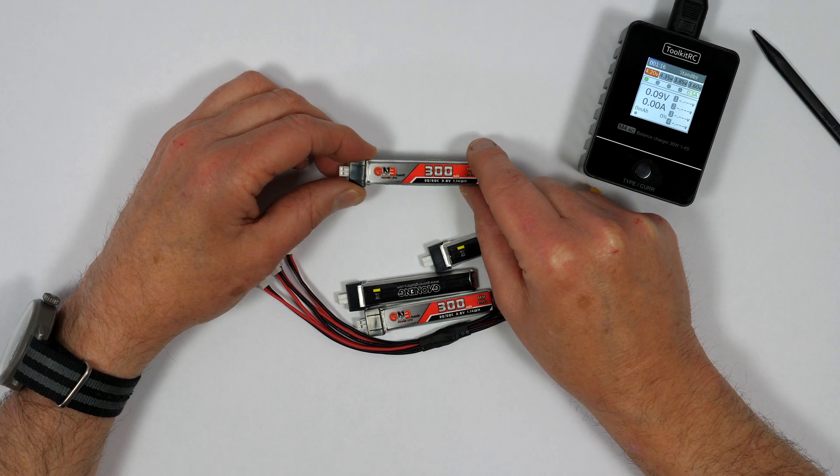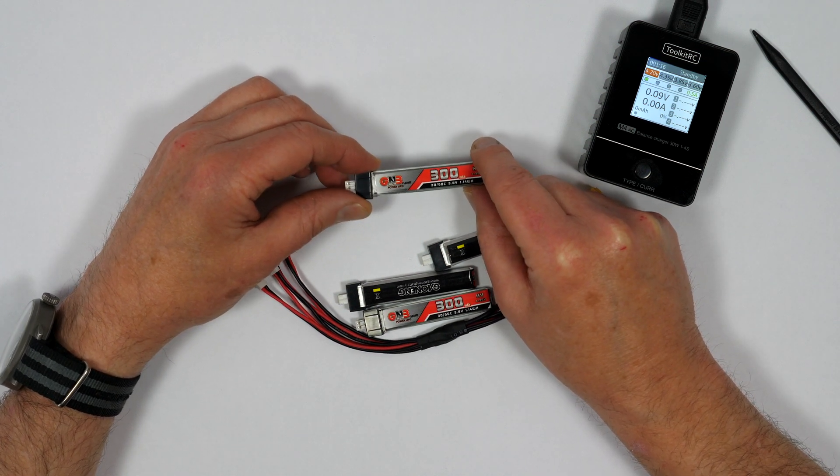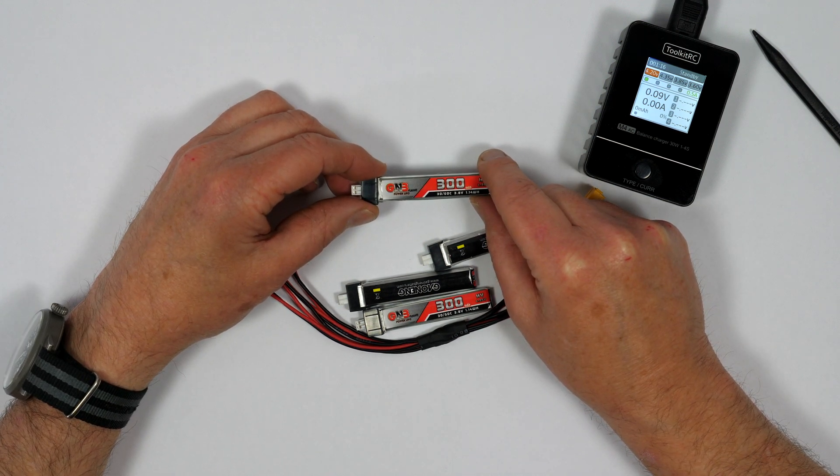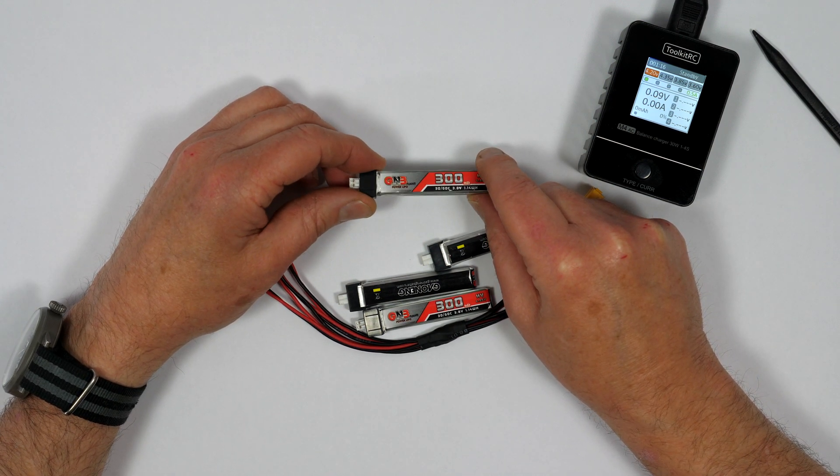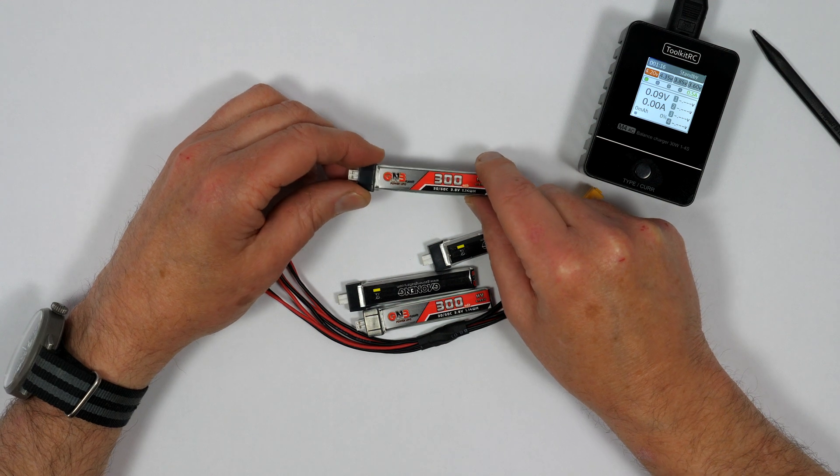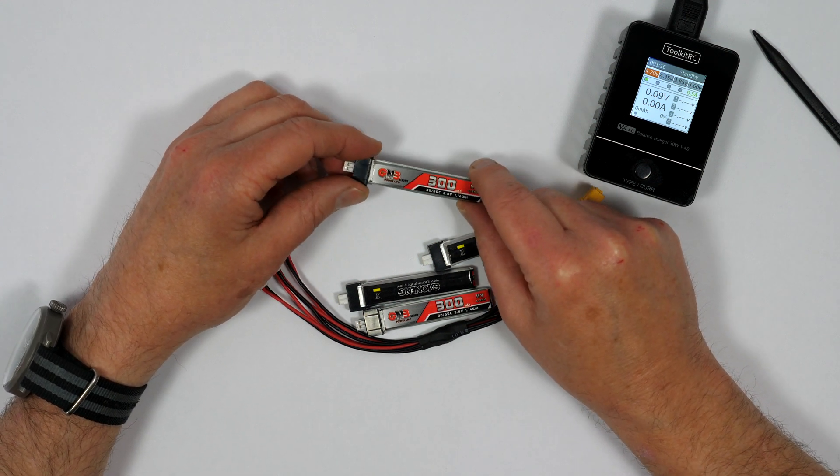You could bump up the charge current to charge them a bit quicker. 2C, which would be 600mA or 0.6 amps, would charge them in under an hour. You just need to remember the charge voltage is 4S or 16.8 volts.